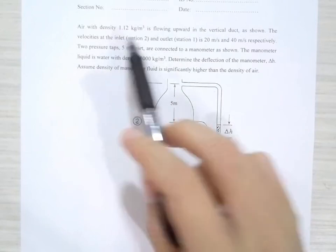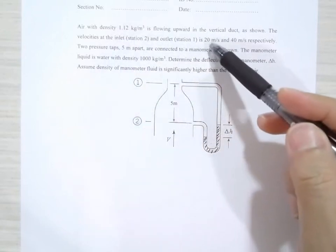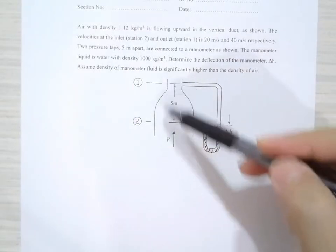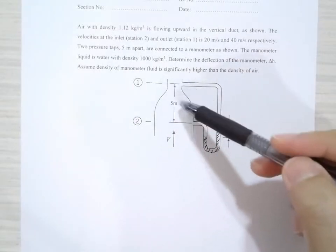The velocities at the inlet, station 2, is 20 meter per second, at station 1, 40 meter per second. So there is an area contraction, and because of that, the velocity increases.